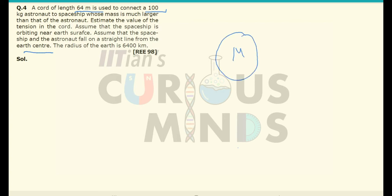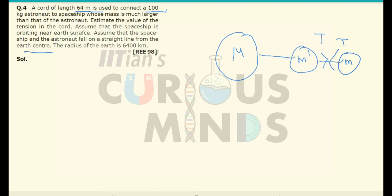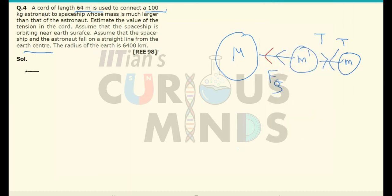There are many assumptions in this problem. If the spaceship has mass m' and is orbiting very close to Earth with an astronaut attached, we analyze the forces. For the satellite, tension acts outward; for the astronaut, tension acts inward. The gravitational force acts downward, and the resultant centripetal force acts inward. So: F_g minus tension equals the centripetal force, which equals m'·ω²·r.